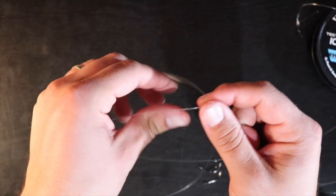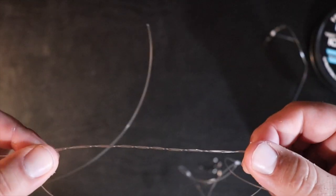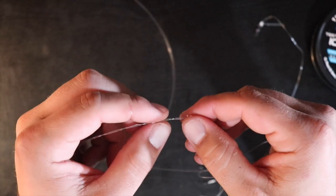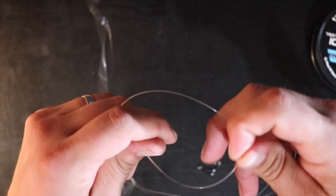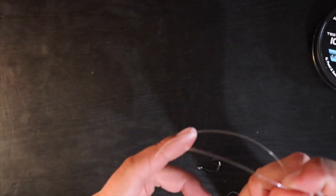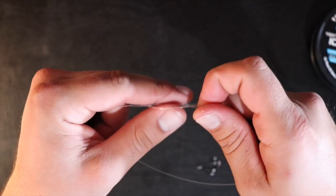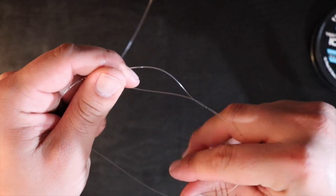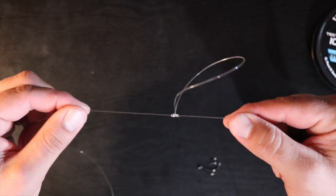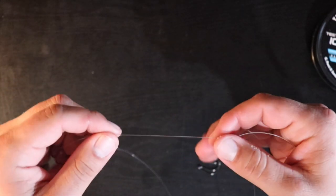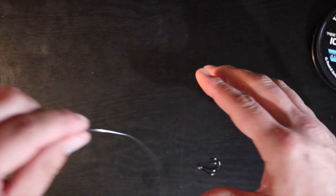All right, so then again, out of those little loops we created, going to find one about in the center. We're going to take this bottom side, run it right up through there. Again, got to use your teeth with this, pull it tight like so. And that is going to make dropper number two.